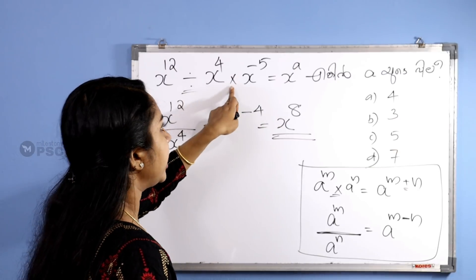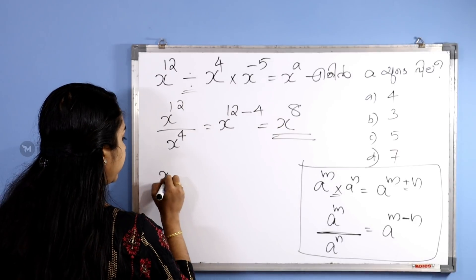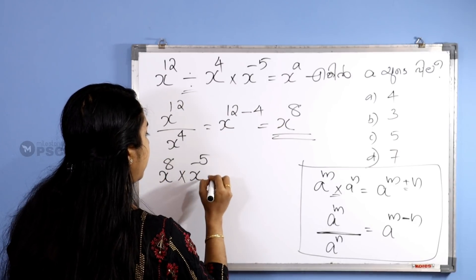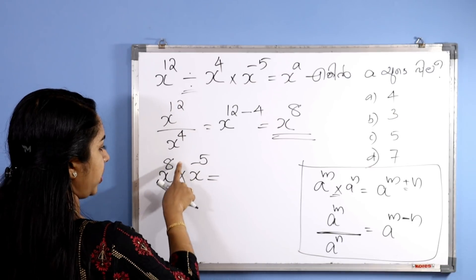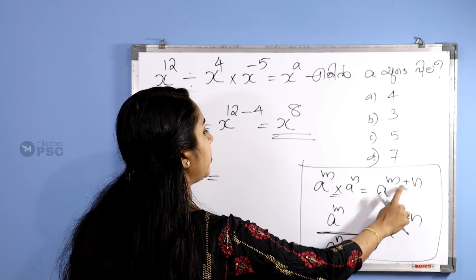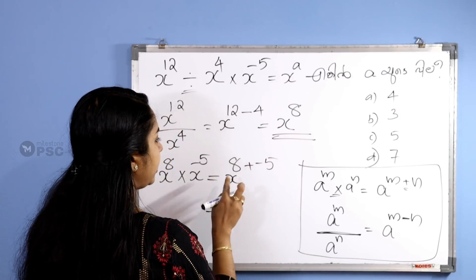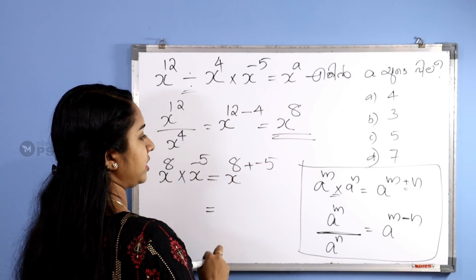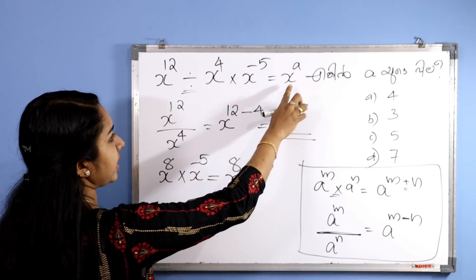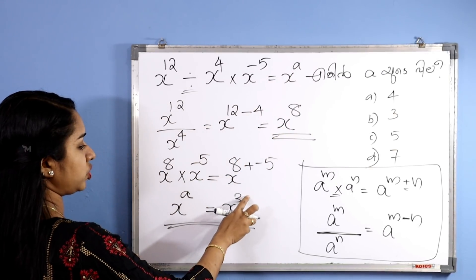Now, x raised to 8 into x raised to minus 5. Using the multiplication rule, we add the exponents: 8 plus minus 5, which gives x raised to 3.